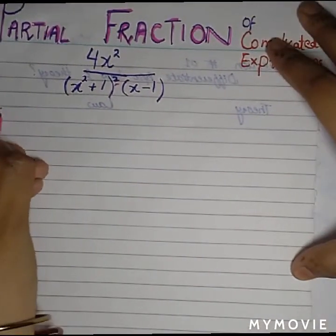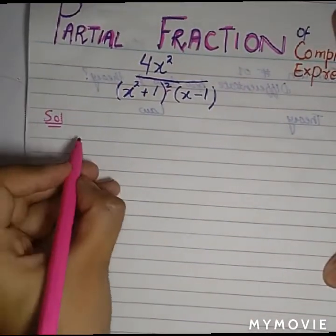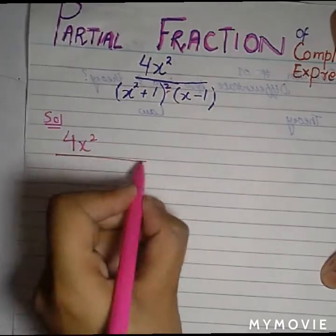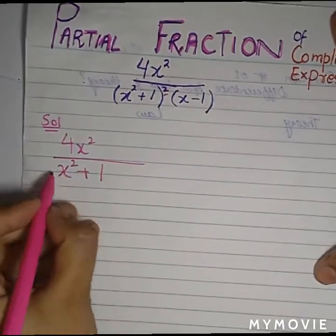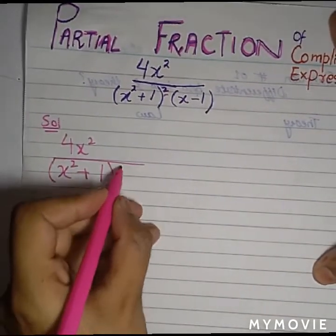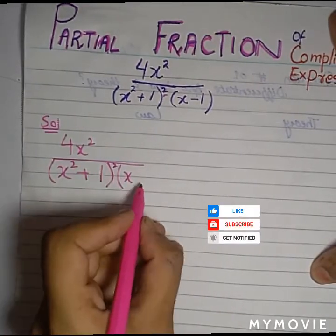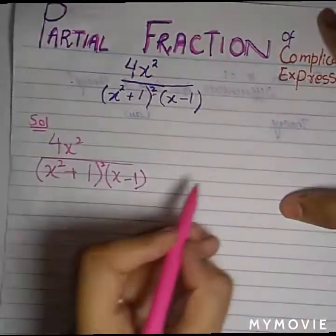First step solution you have to follow is: 4x squared divided by (x squared plus 1)(x minus 1) squared. Watch the question carefully.